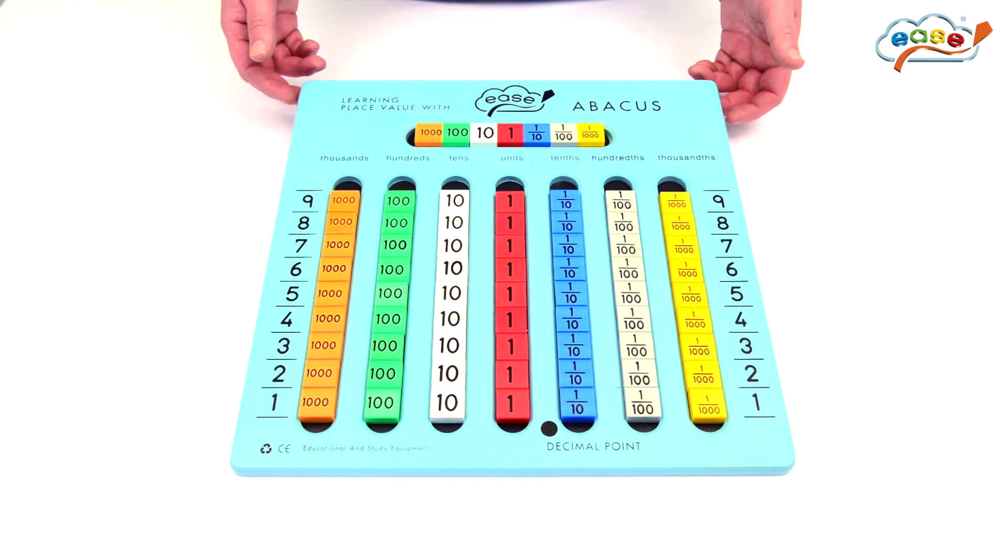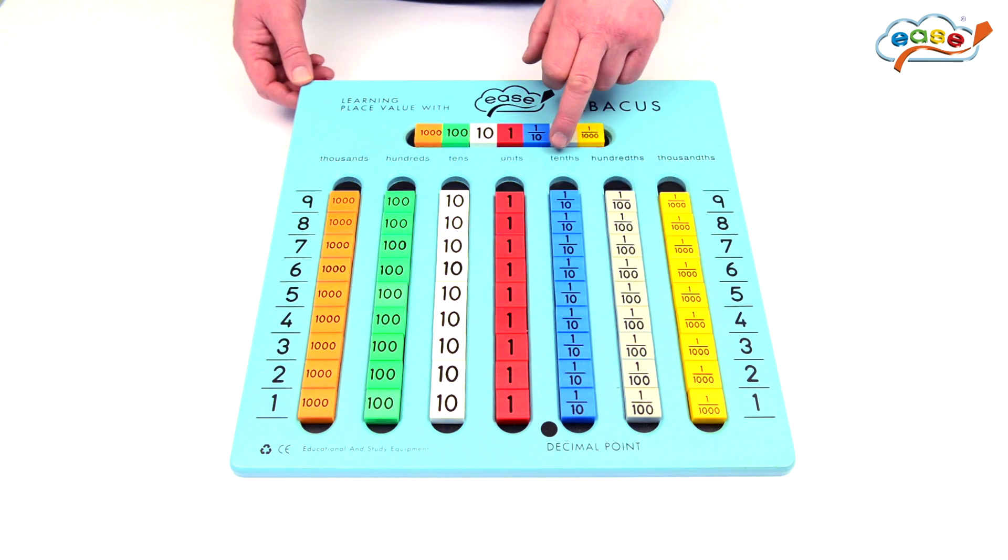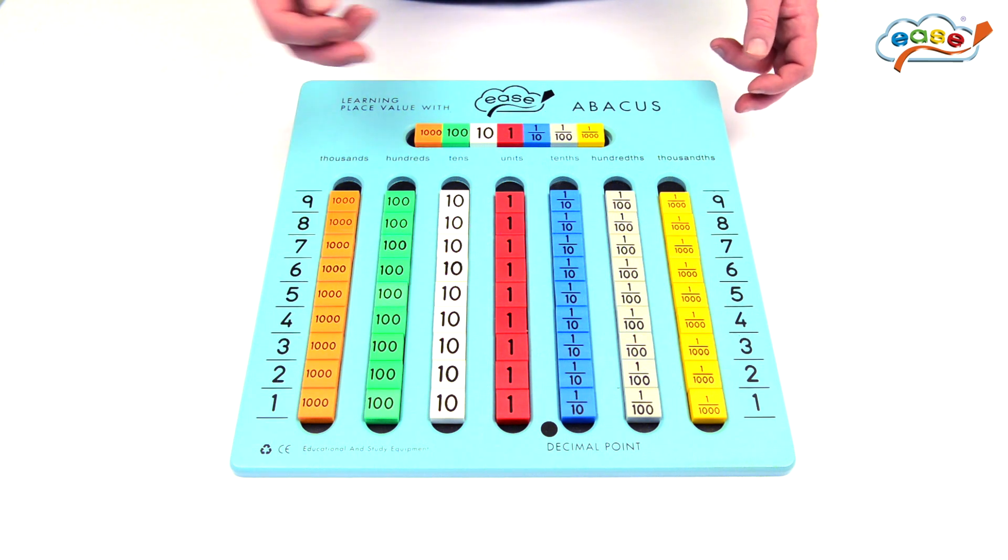The ease abacus showing the decimal point introduces the idea of the tenths, hundredths and thousandths of a unit, as well as your standard units, tenths, hundredths and thousandths.